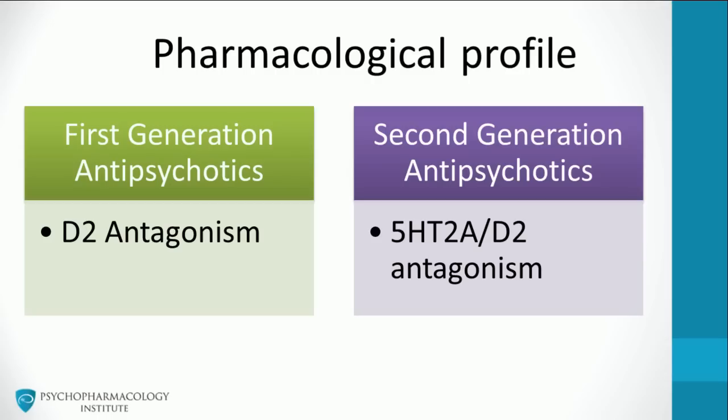Now let's see the differences regarding pharmacological profiles. First generation antipsychotics are D2 antagonists. They act on different regions such as mesolimbic, mesocortical, nigrostriatal, and tuberoinfundibular pathways. Both first and second generation antipsychotics have some degree of D2 antagonism, which has proven to be responsible for antipsychotic efficacy. Besides D2 antagonism, first generation agents have effects on other receptors such as muscarinic, adrenergic alpha-1, and histamine-1; blockade of these receptors is related to their side effects profile.